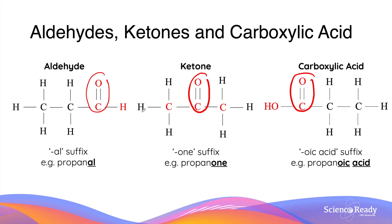The difference, however, is what that carbon atom is further bonded to. In an aldehyde, the carbon atom is bonded to another carbon atom and a hydrogen atom at the end of the molecule. In a ketone, this carbon atom is sandwiched between two other carbon atoms as its neighbors. In a carboxylic acid, the carbon atom is bonded to a hydroxyl group (OH) at the end of it. It is important to recognize the similarities and differences between these three functional groups.